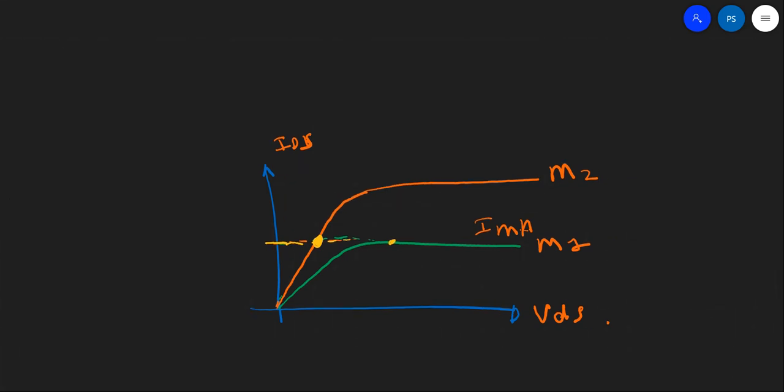I would just repeat this point once. Once M2 goes into linear region, it can still carry this current I by going into linear and having higher VGS. By higher VGS means the curve would be something like this. If this is for one value of VGS, if this curve is for one value of VGS, this will be for higher value of VGS.